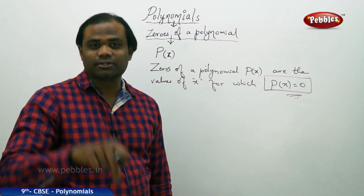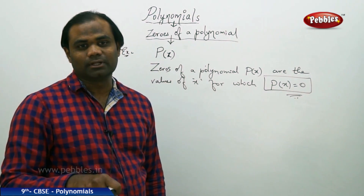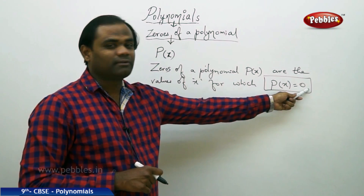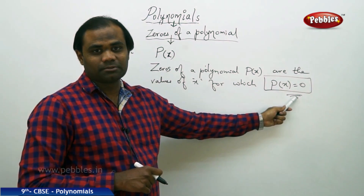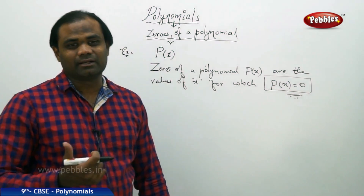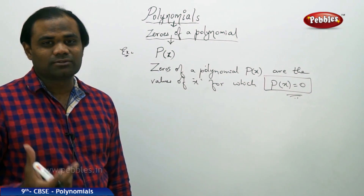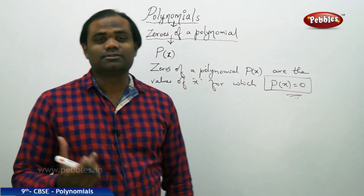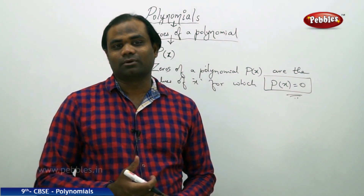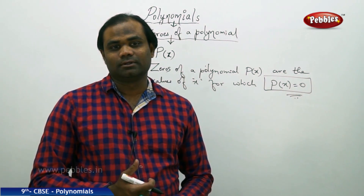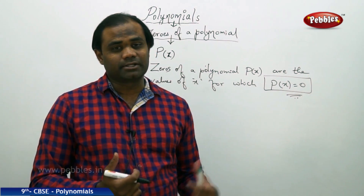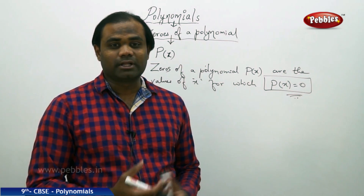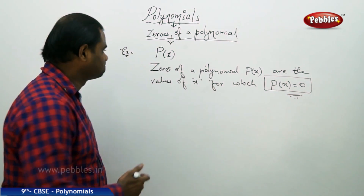In order to find the zeros of a polynomial, we simply solve the equation p of x equal to zero, and the values of x obtained are called zeros of the polynomial. Let's understand this concept more strongly by taking an example problem.